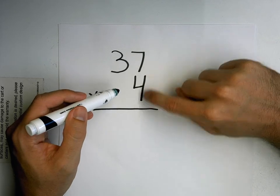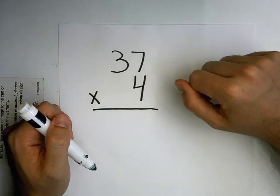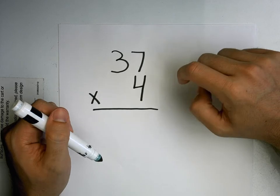Addition, we just line them up and add up our ones, add up our tens, and then we have our answer. Multiplication is different.